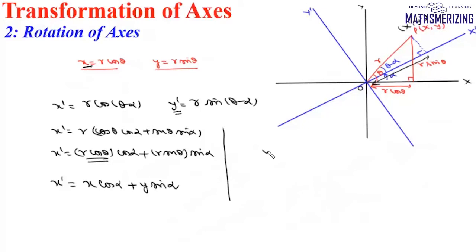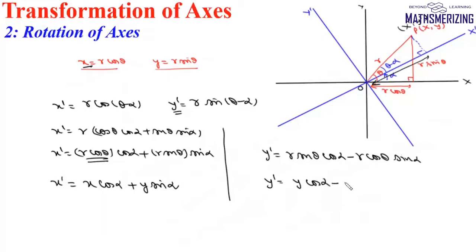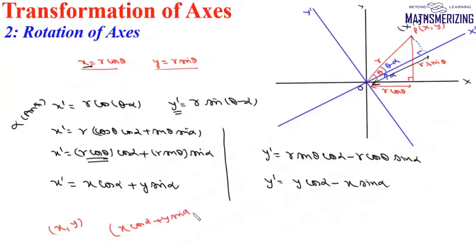In the same way, we can write Y dash as R sin theta cos alpha minus R cos theta sin alpha. Since R sin theta is Y and R cos theta is X, it simplifies to Y cos alpha minus X sin alpha.